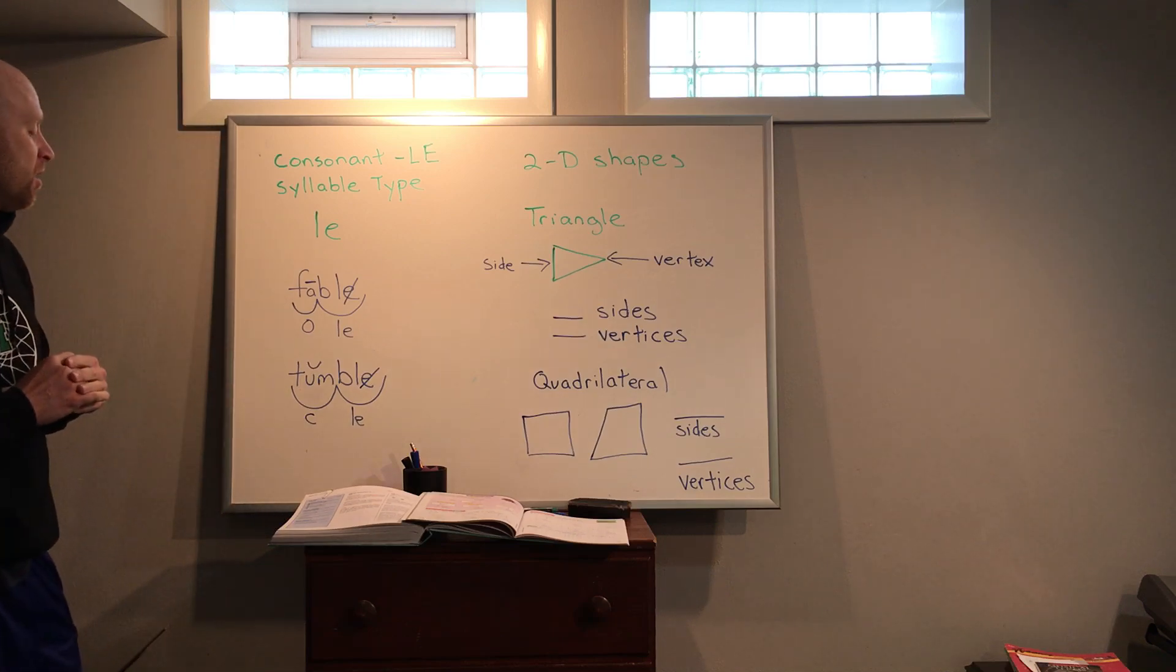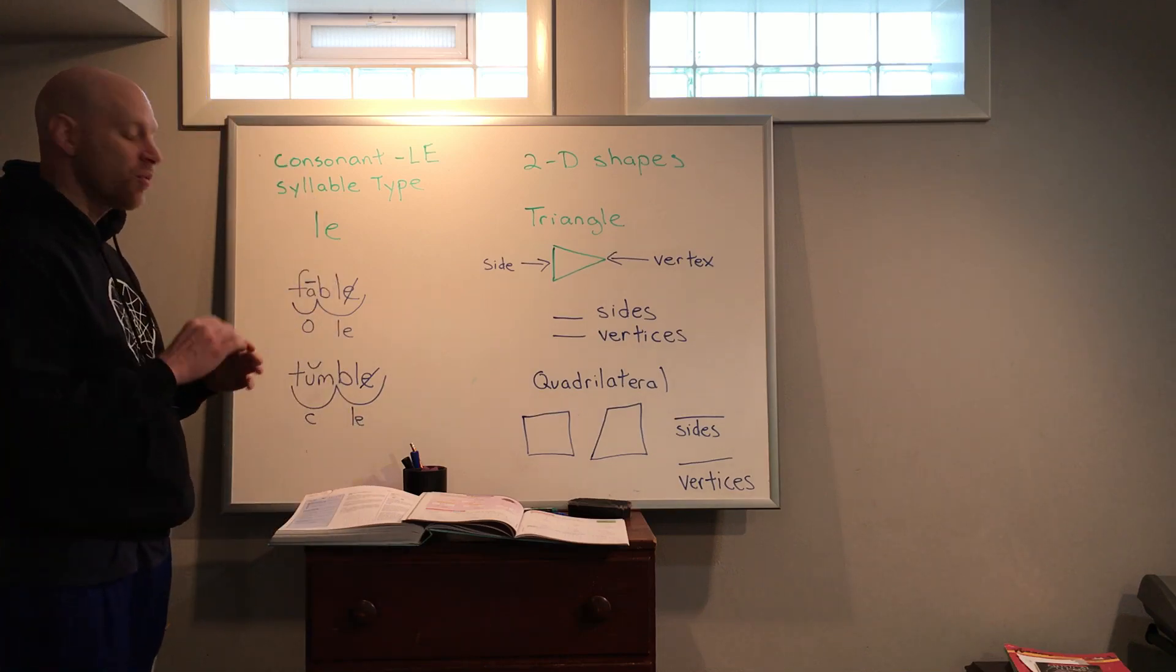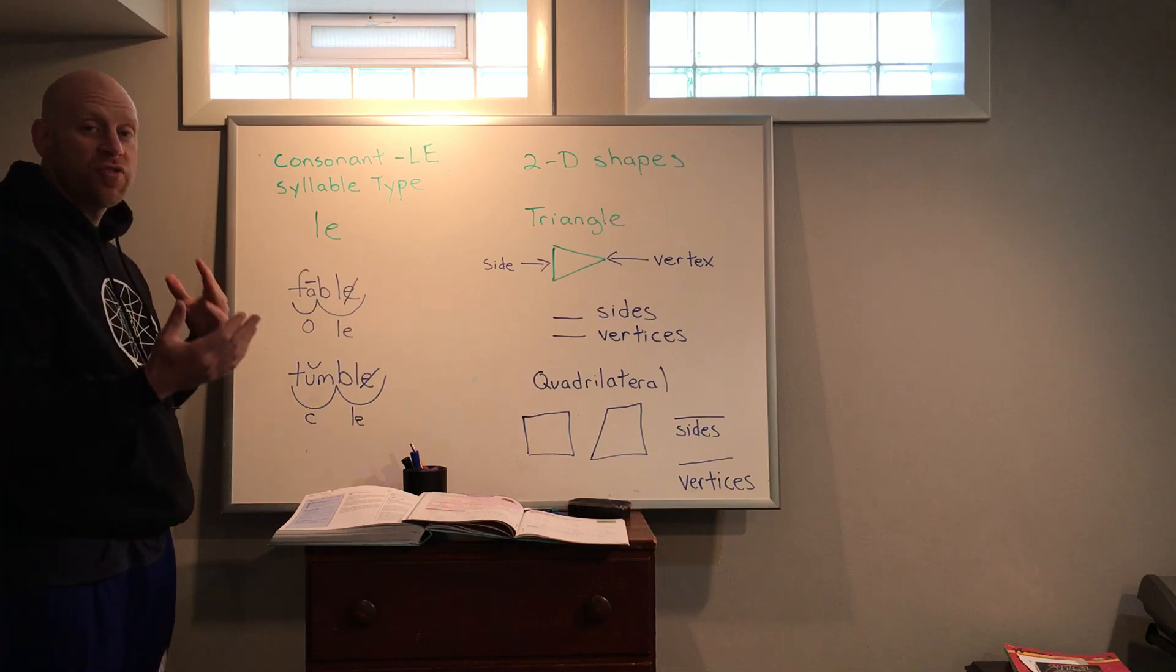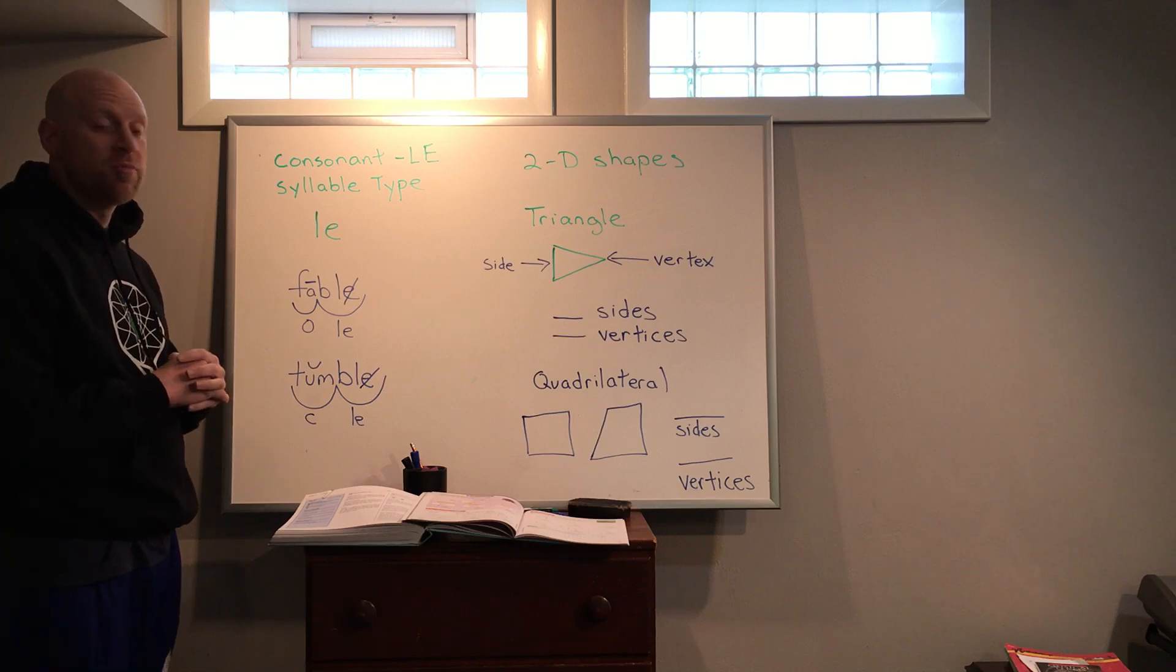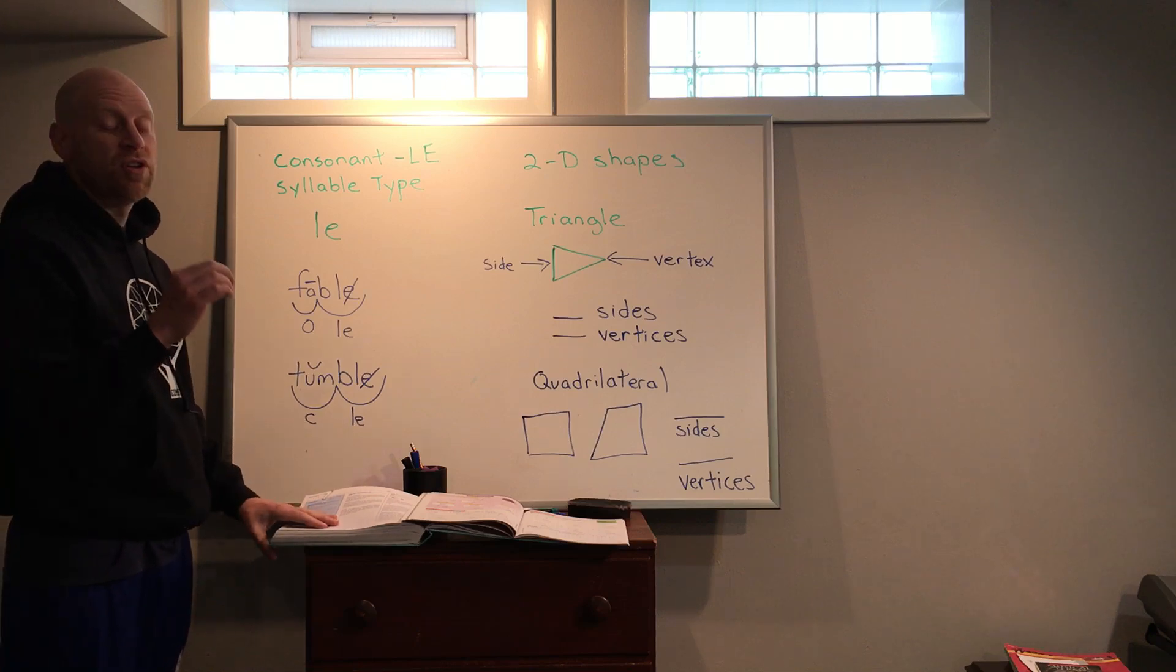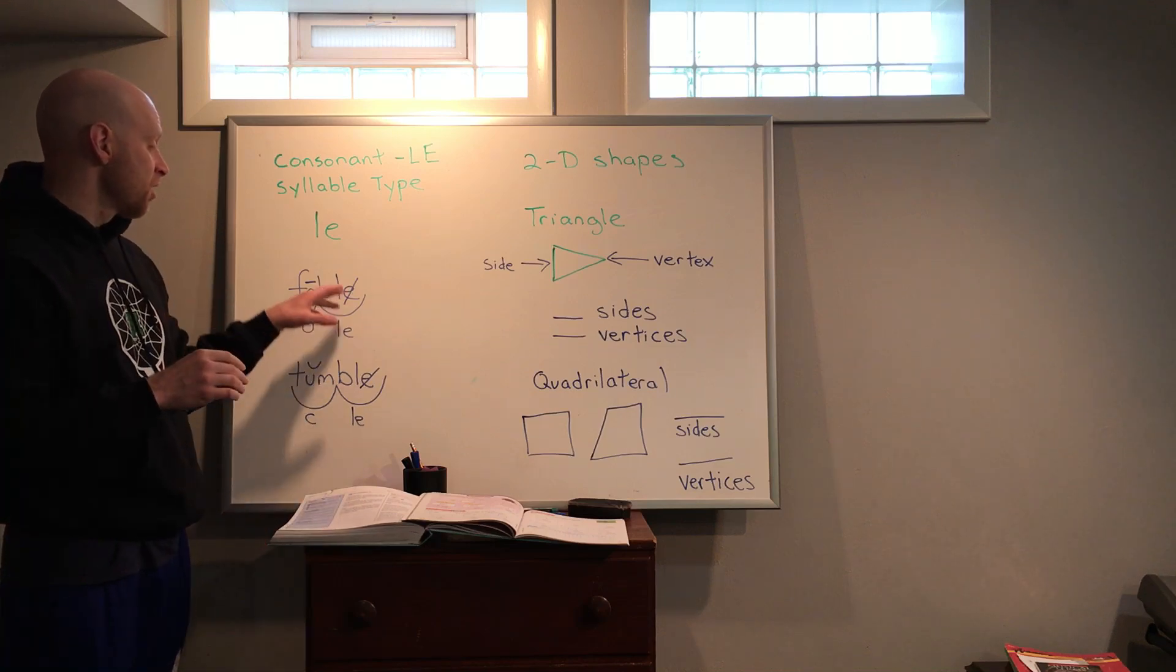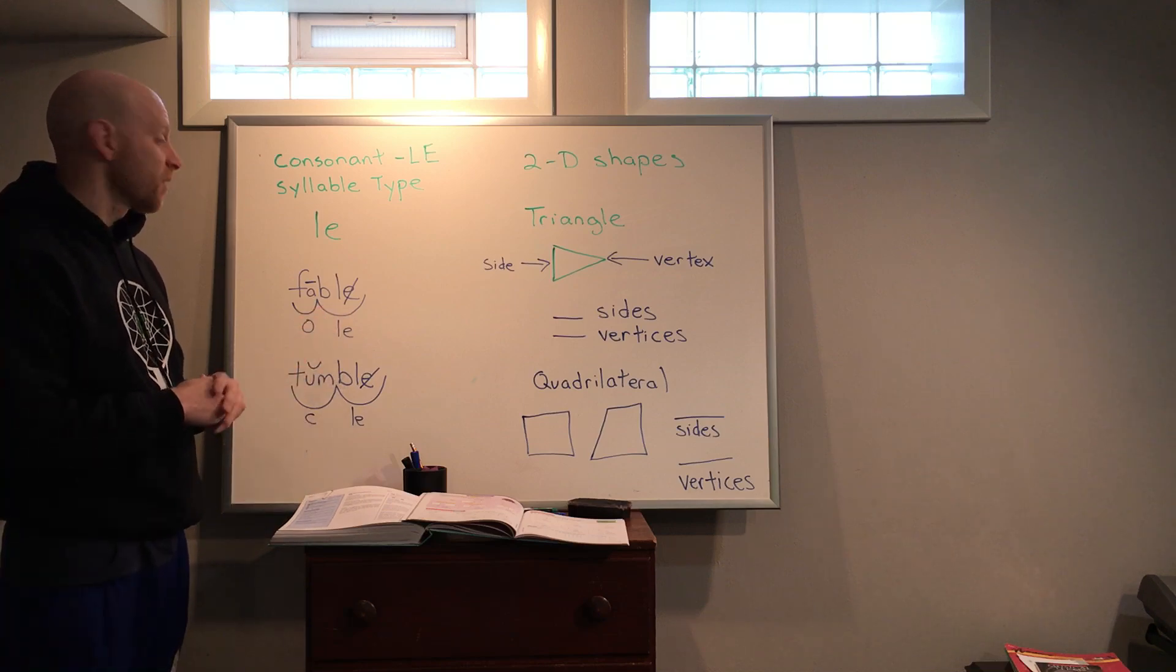For consonant LE, we know that LE typically goes at the end of a word or syllable and then it often is combined with another type of syllable. Like fable is our first word. Fable, we know, is like a make-believe story, so we would clap it out and say fable. We know it's two syllables. With those two syllables we would know that there's at least two vowels. You hear that long A, so we know that's gonna be the first syllable because it's gonna be an open syllable. Now the thing is we don't hear that L. We don't have to hear that E with the LE. We just hear the L sound.